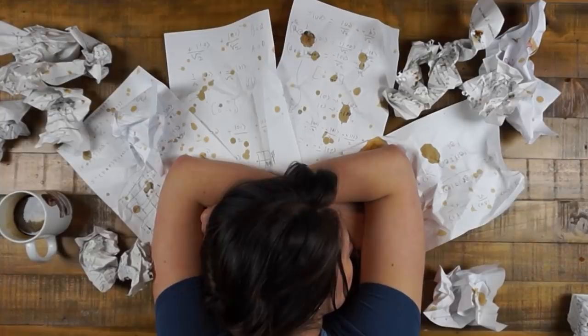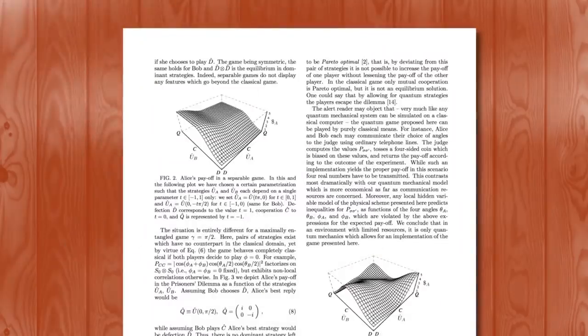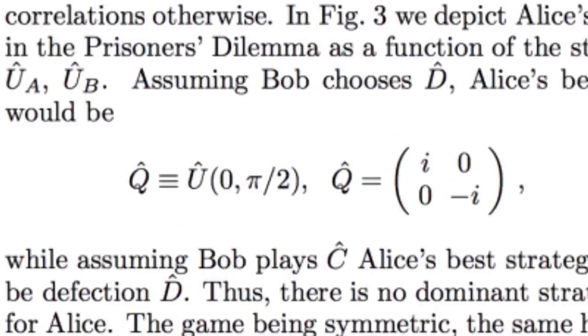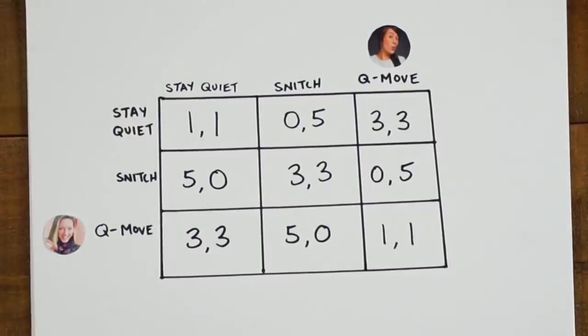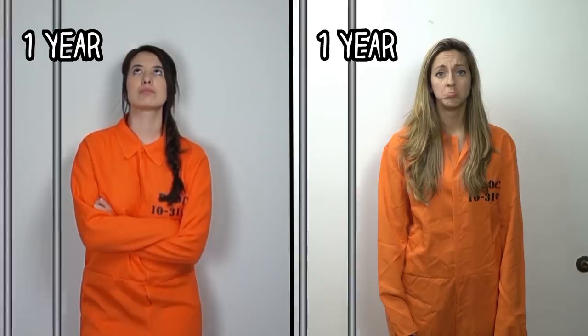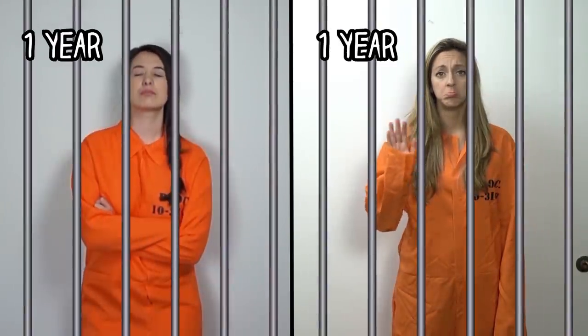So you both have a qubit. In the regular non-quantum scenario you only have two options: stay quiet or snitch. But now with your qubits you have a whole new range of quantum moves. The authors of this paper highlight what they call a Q move, which ensures that you can both stay quiet with a guarantee that the other player won't snitch. In other words, the presence of the qubit forces cooperation. You still have to go to jail for a year, but hey, bank robbing is a crime.